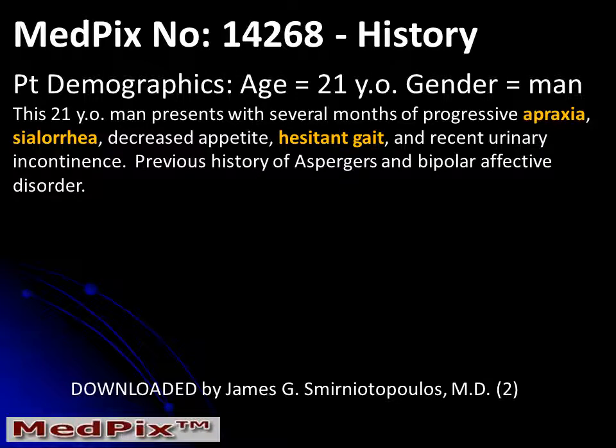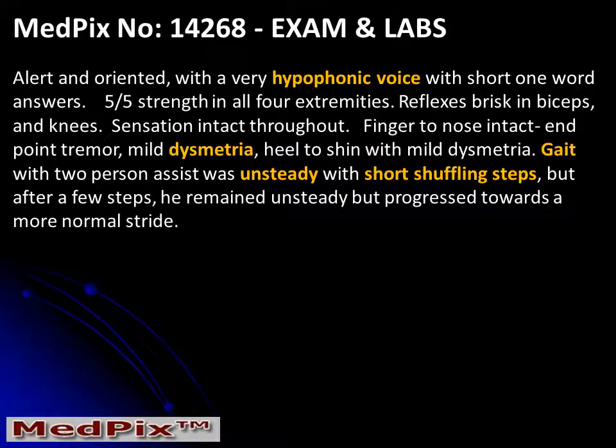This week's patient is a 21-year-old man who presented with several months of progressive apraxia, sialorrhea, and hesitant gait. He has a previous history of Asperger's and bipolar affective disorder. On physical exam, he had a hypophonic voice, dysmetria, and a gait disturbance with short shuffling steps.